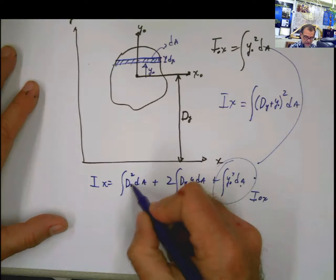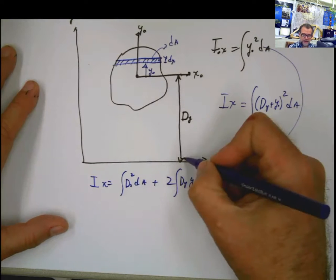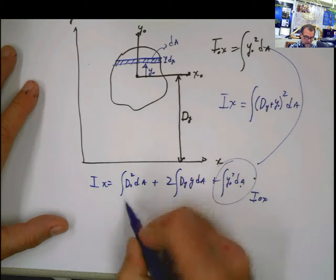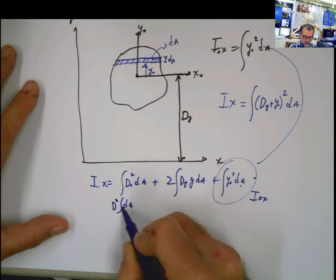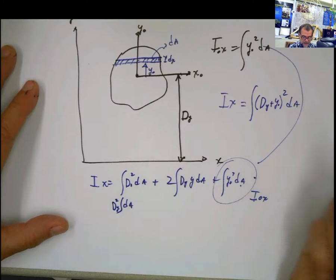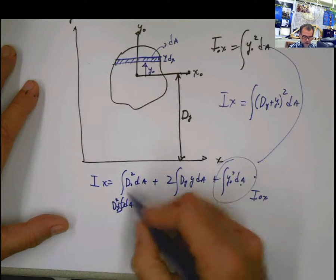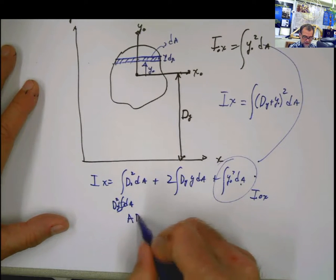This d is constant because it is the distance that separates both axes. So I can take this d outside and say that this is d² dA. And as you know, the integral of dA is A. So this whole term is going to be basically A times that distance squared.